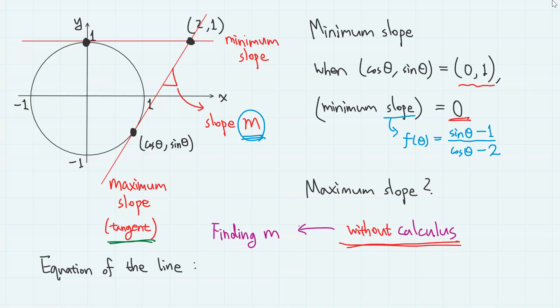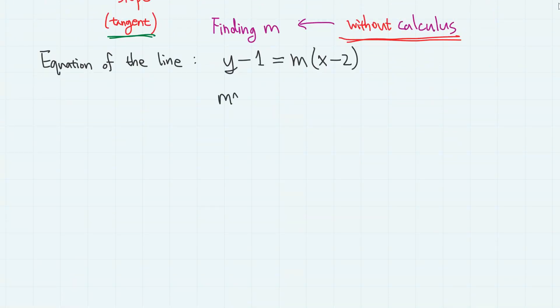First, let us find the equation of the line passing through point 2 comma 1 with slope m. This is pretty basic knowledge on linear functions. And the equation is y minus 1 equals the slope m times x minus 2. So we have mx minus y minus 2m plus 1 equals 0.